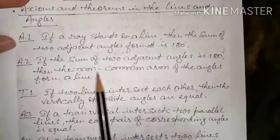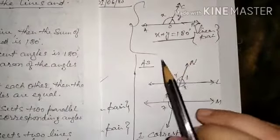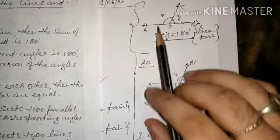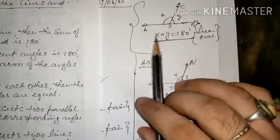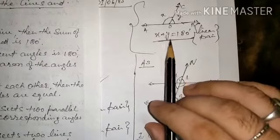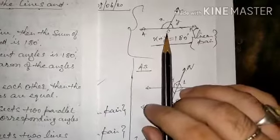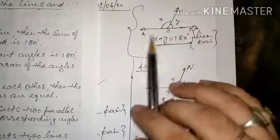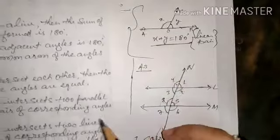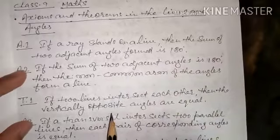Axiom 2 is the converse: if the sum of two adjacent angles is 180 degrees, then the non-common arms of the angles form a line. So if it is given that x plus y equals 180 degrees, you can conclude that AB forms a straight line. The non-common arms are going to form a line.